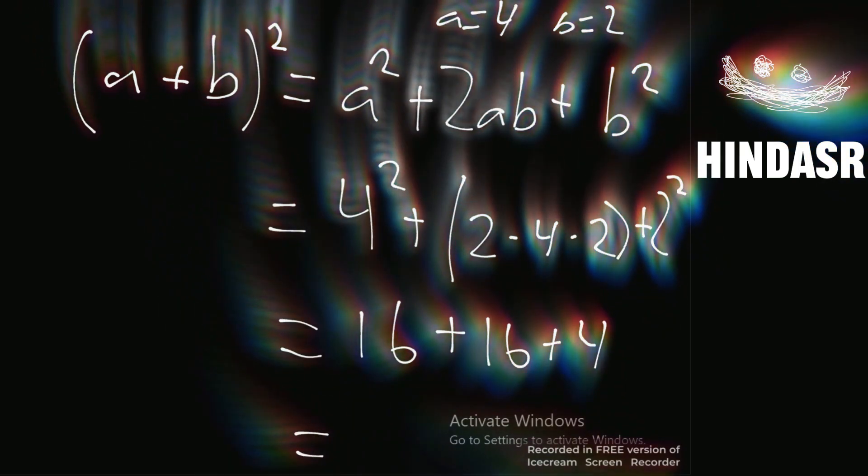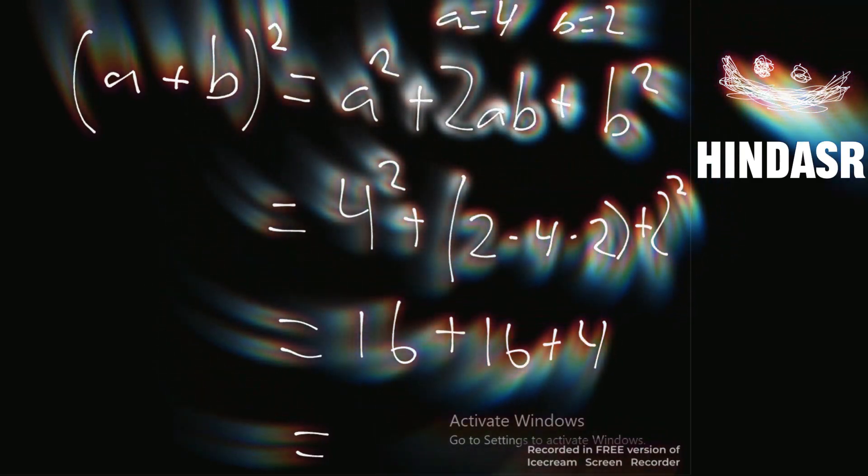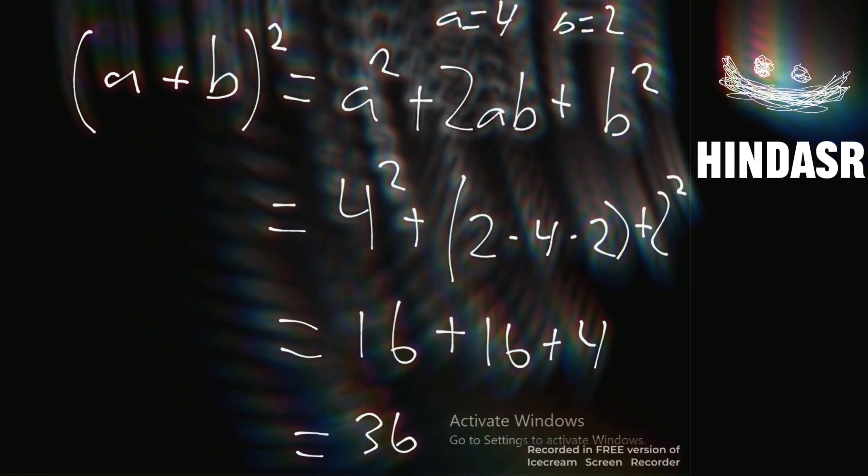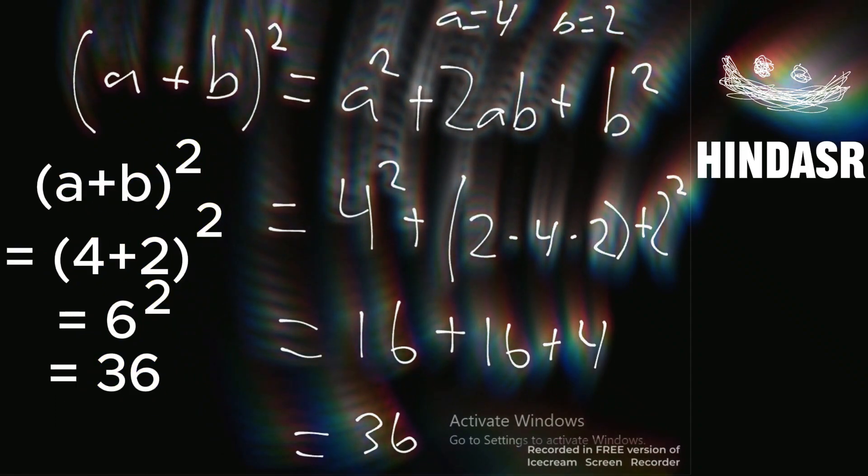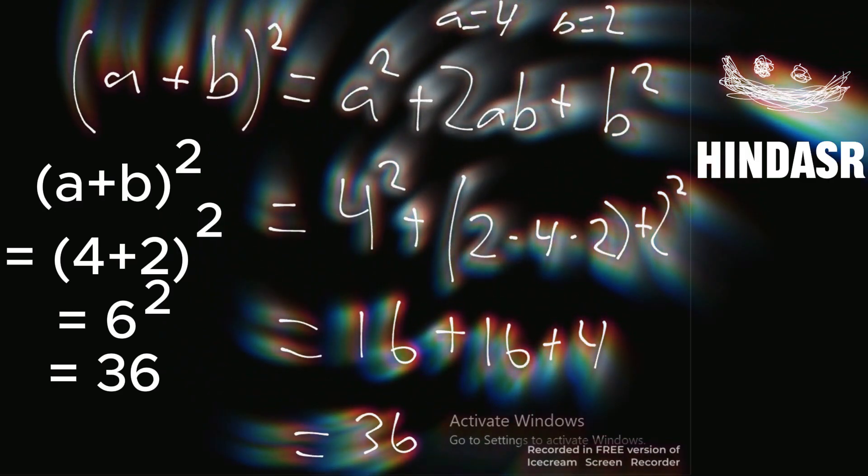So 16 plus 16 is 32, 32 plus 4 is 36. So this equation is equal to 36.